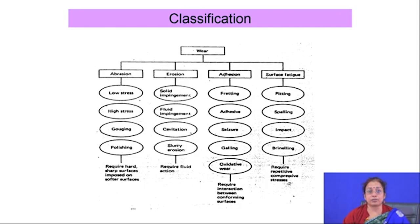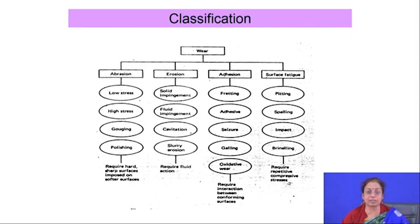Wear is a relative property of materials. You cannot define the wear property of a material by a single value as in the case of tensile strength or yield strength. It depends on the environment, applied load, sliding velocity, and material-to-material combinations.